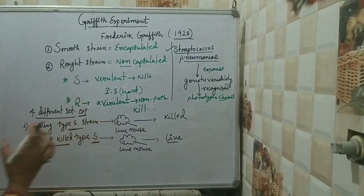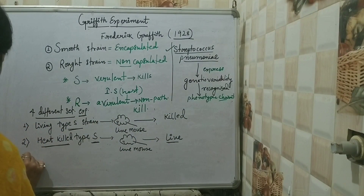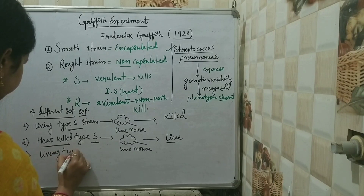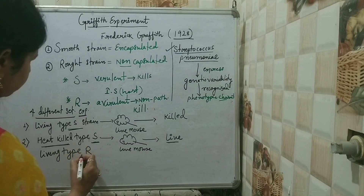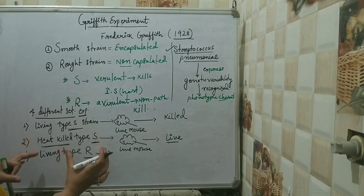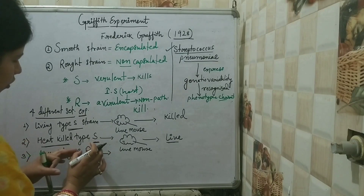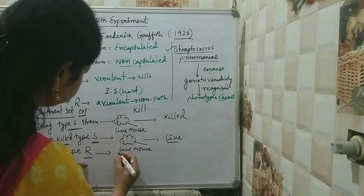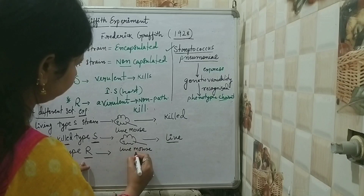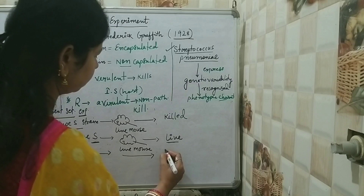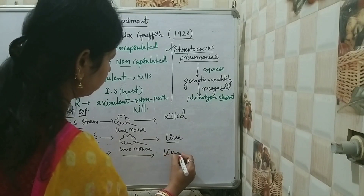In the third set, he injected living type R strain into a live mouse. Since rough strain is already non-pathogenic, when the live rough strain was injected into the live mouse, it also did not die. The mouse was alive.